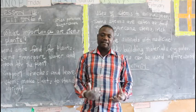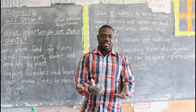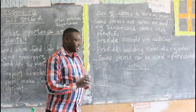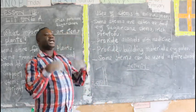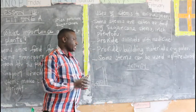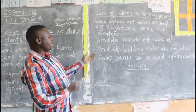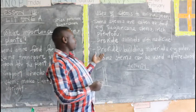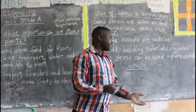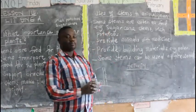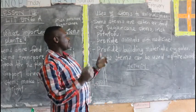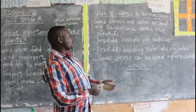Some stems provide animals and man with medicine. We get medicine from some stems — for example, for treating malaria. Some stems provide man with herbal medicine, and herbalists use stems to make herbal medicine.